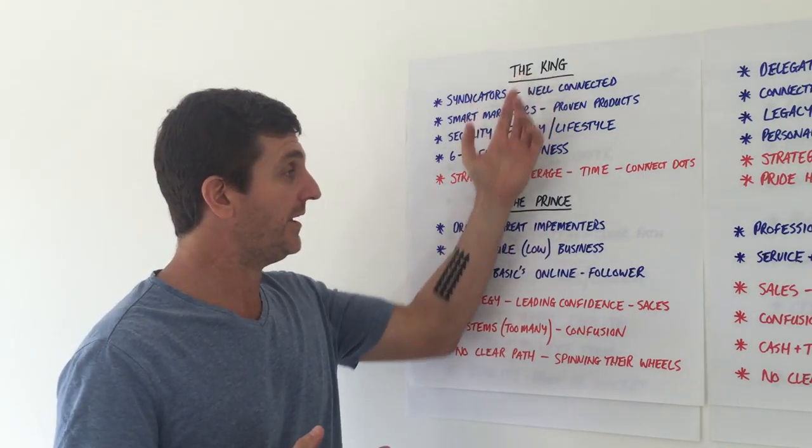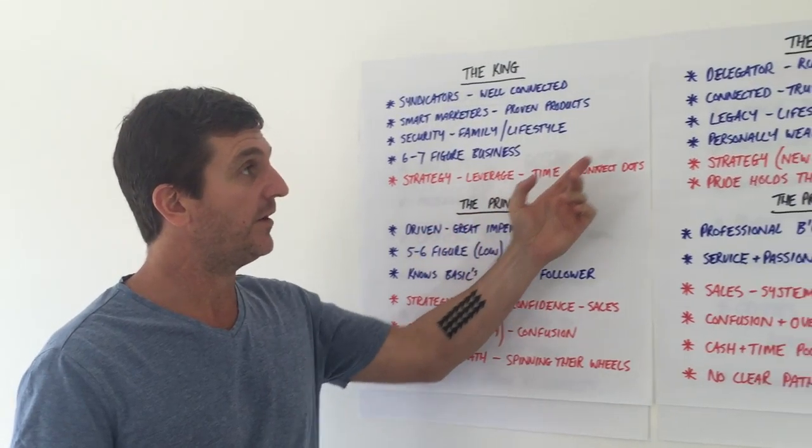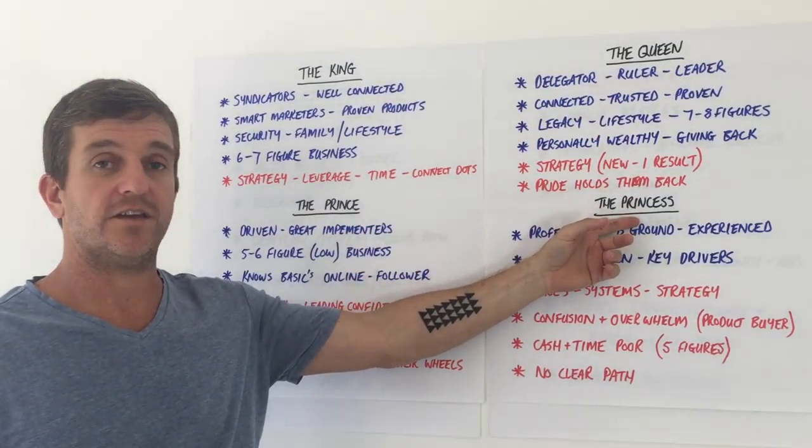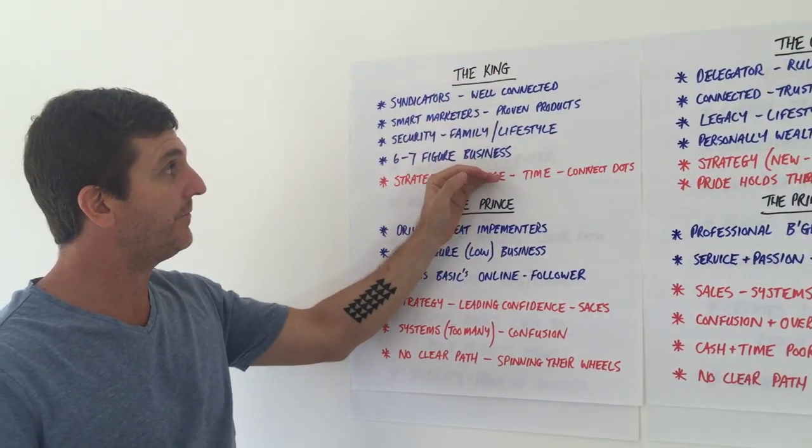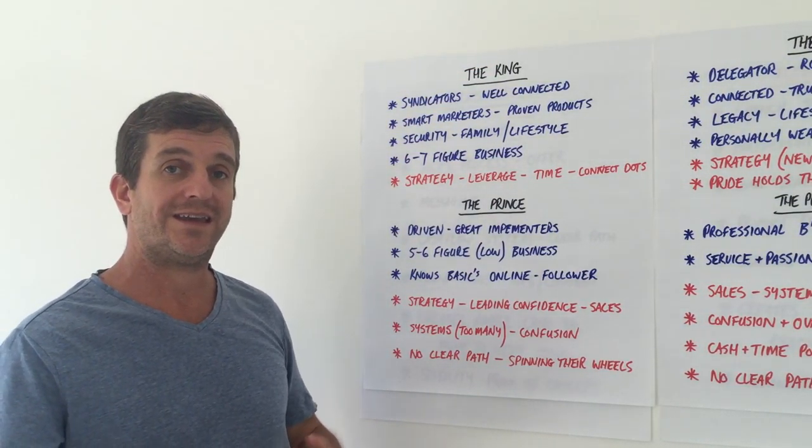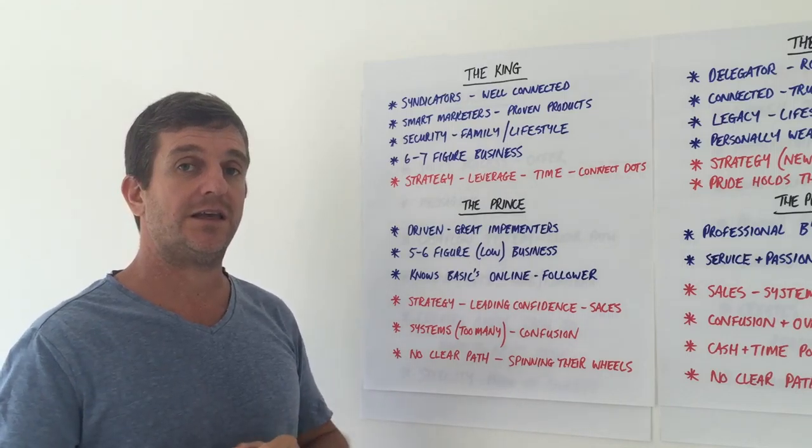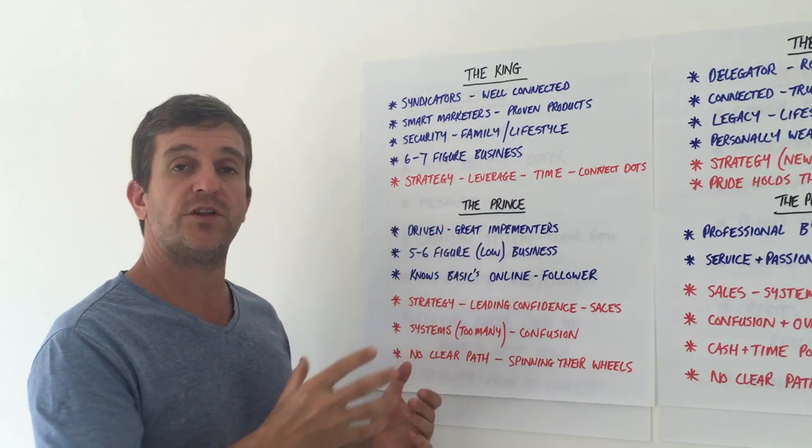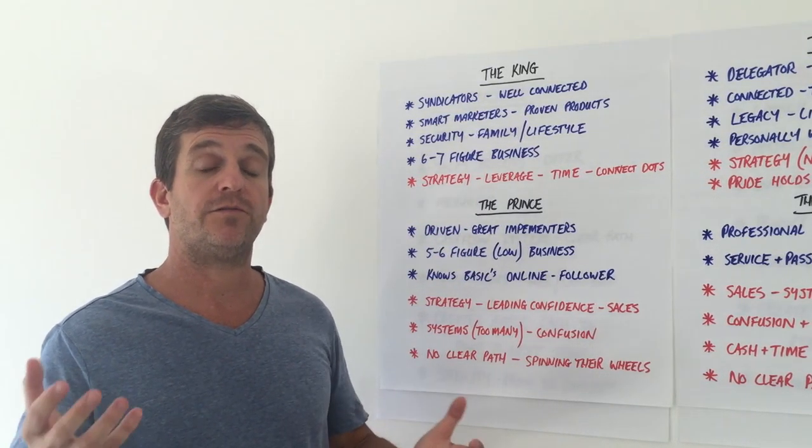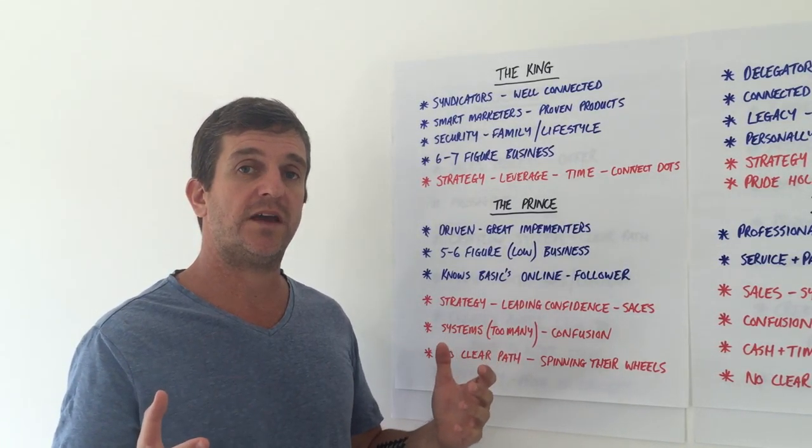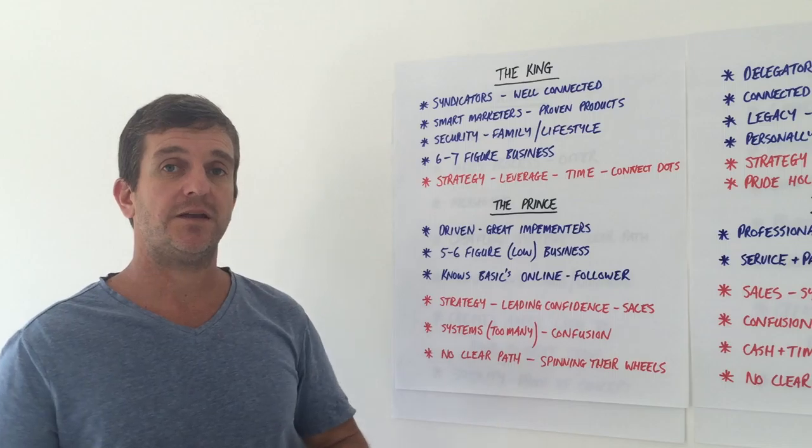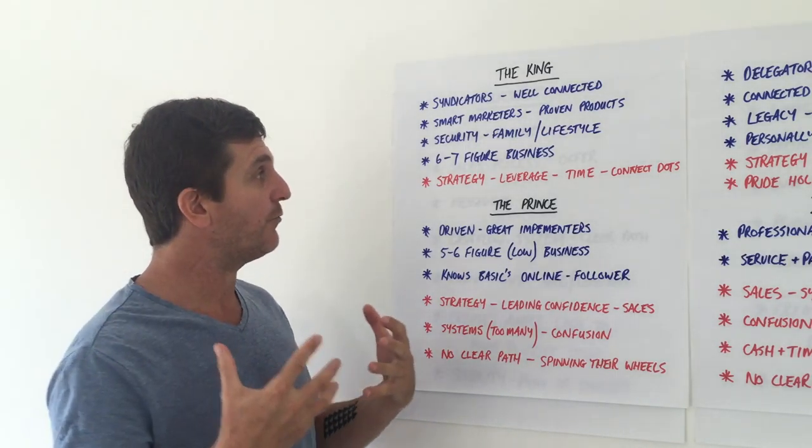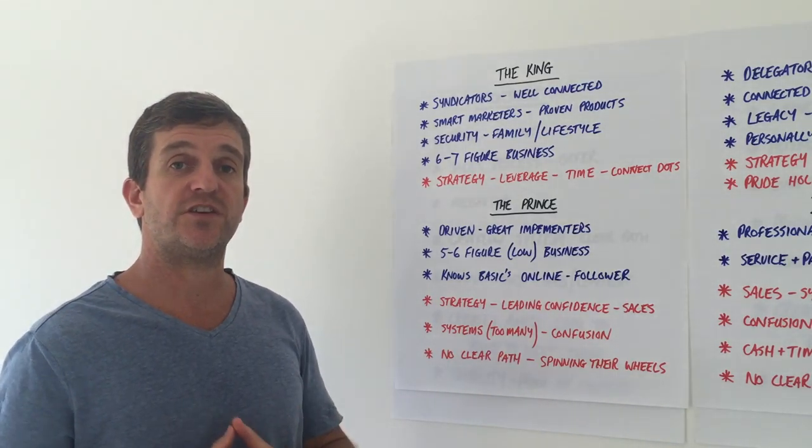First of all, I want to introduce you to who this is for. I've got four ideal client types: the King, the Prince, the Queen, and the Princess. We'll start here with the King.